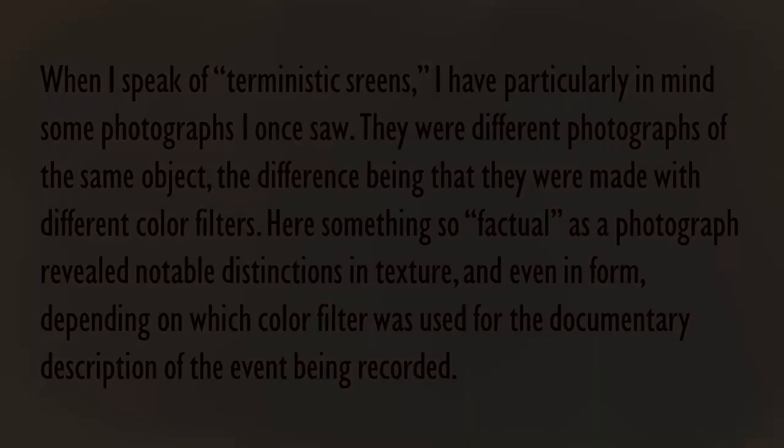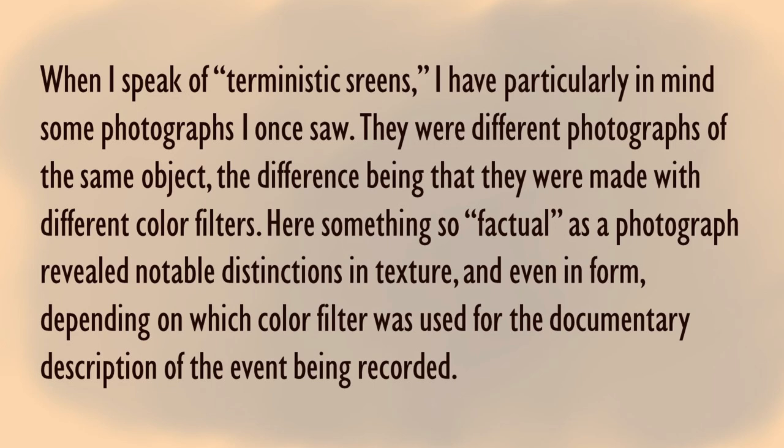Near the beginning of his essay, Burke writes: 'When I speak of terministic screens, I have particularly in mind some photographs I once saw. They were different photographs of the same object, the difference being that they were made with different color filters. Something so factual as a photograph revealed notable distinctions in texture and even in form, depending on which color filter was used.' So even as we can see right now, when you filter light in different ways, you'll see different things.